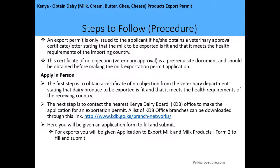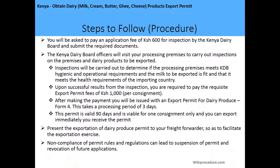A list of Kenya Dairy Board office branches can be downloaded through the link provided. At the office, you will be given an application form — Form Number 2, the 'Application to Export Milk and Milk Products' — to fill in and submit. You will also be asked to pay an application fee of 600 shillings for inspection by the Kenya Dairy Board, and to submit all the required documents.